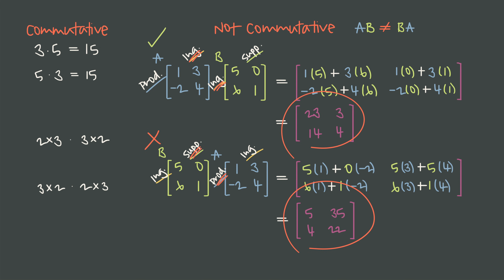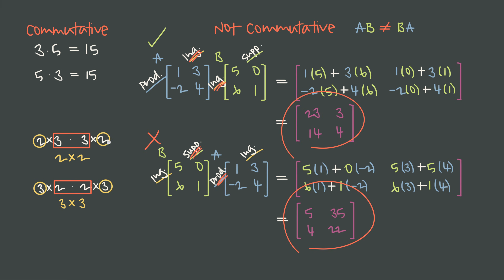Even with non-square matrix examples: if we multiply a 2-by-3 by a 3-by-2, we can do it because the inner dimensions match. But if we flip the order, we have a 3-by-2 by a 2-by-3 — the inner dimensions still match, so we get a result either way. However, the first configuration produces a 2-by-2 matrix and the second produces a 3-by-3 matrix. The resulting matrices have completely different dimensions, so the results are never equivalent, even though all we did was change the order.